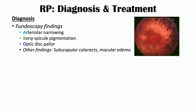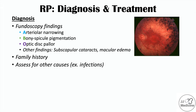Additional findings include posterior subcapsular cataracts — which we discussed as a cause of glaring — and macular edema, where the macula becomes edematous. Family history is also important to assess. In autosomal recessive cases, it may only be found in distant relatives or may not be found at all, but in autosomal dominant cases one of the parents will have this condition. Siblings should also be assessed. It is important to rule out other causes, as certain infections can lead to similar findings.